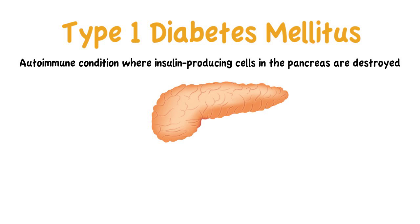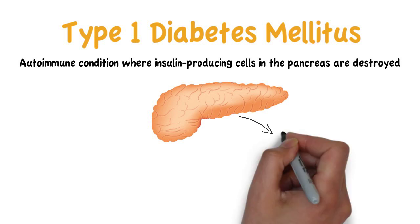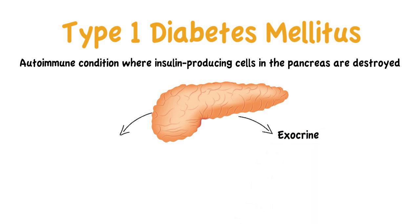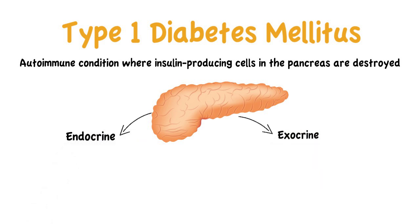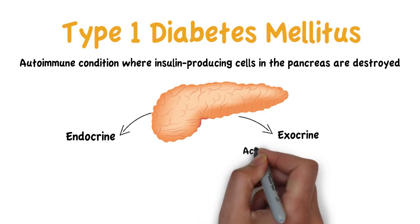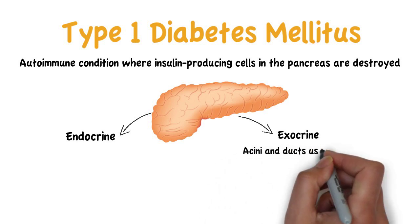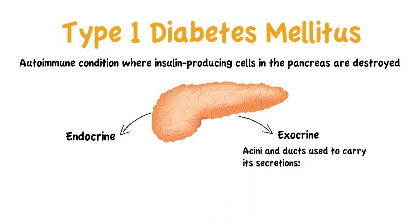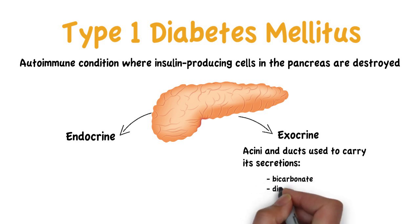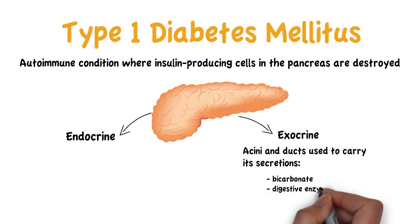The pancreas may be divided into exocrine and endocrine. The exocrine pancreas is organized in acini and ducts used to carry its secretions, which are mainly bicarbonate and digestive enzymes.